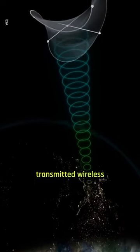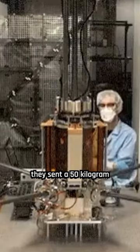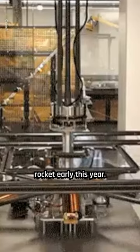Scientists successfully transmitted wireless solar energy from space to Earth. To achieve this feat, they sent a 50-kilogram instrument called the Space Solar Power Demonstrator on a SpaceX rocket early this year.